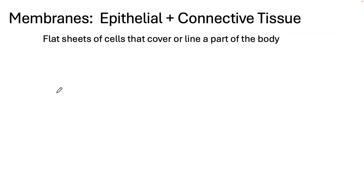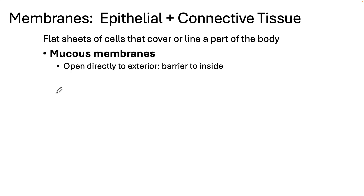We also have tissue membranes within the body that cover and line body surfaces. Most of these membranes are made up of both epithelial and connective tissue working together. There are four different types. Mucus membranes cover areas exposed to the outside of the body — these surfaces must be kept moist to reduce friction and facilitate absorption or secretion, so they secrete a covering of mucus. This type of membrane covers all of the digestive tract, the respiratory tract, the reproductive tract, and most of the urinary tract.